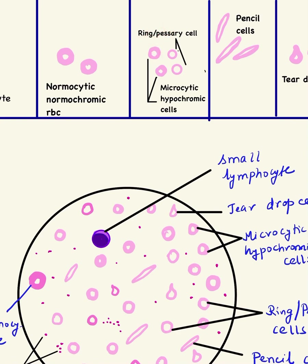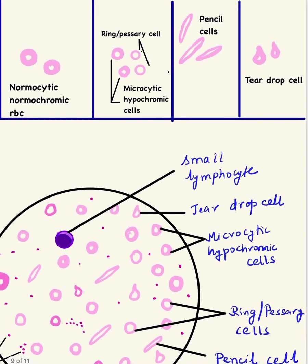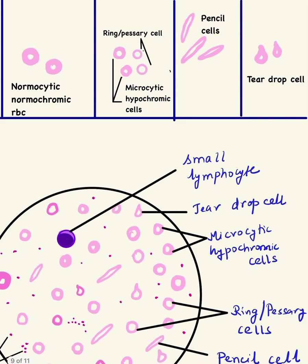In later stages, when there is severe iron deficiency, just a rim of cytoplasm is seen around the periphery of the cell. Such a cell is known as a ring cell or pessary cell — it has just a rim of cytoplasm with the entire central area showing pallor.